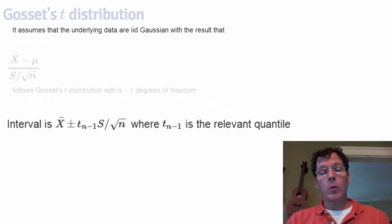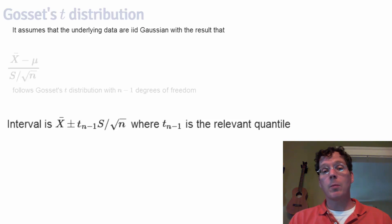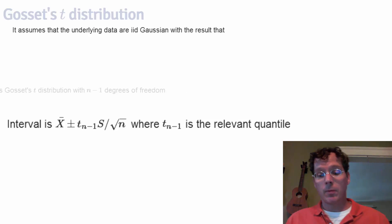Our interval winds up to be x-bar plus or minus the t-quantile with degrees of freedom n minus 1, times the estimated standard error. We'll go through some examples, and I hope you'll get the hang of it.